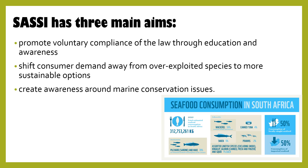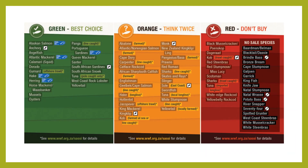SASSI has three main aims: promote voluntary compliance of the law through education and awareness; shift consumer demand away from over-exploited species to more sustainable options; and create awareness around marine conservation issues. Here are the lists for best choice, think twice, and don't buy.